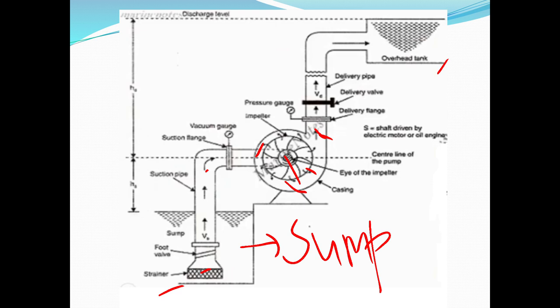This is a foot valve — it is a non-return valve. This is a non-return valve, meaning water flows only in one direction. You should open it to allow water flow. This does not allow return flow. This is the suction pipe — you should write the suction pipe on the left side.